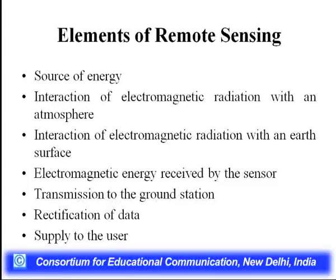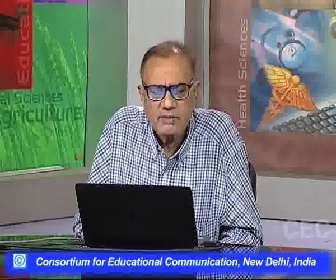Remote sensing detects energy coming from the sun, so the source of energy is very important. Then there is interaction of electromagnetic radiation with the atmosphere — sun energy coming to the earth's surface passes through the atmosphere. Then interaction of electromagnetic radiation with the earth's surface, then energy received by the sensor, then transmission to the ground station, and then one can do pre-processing, rectify the data, and supply it to users.